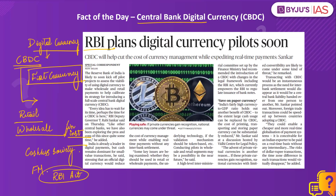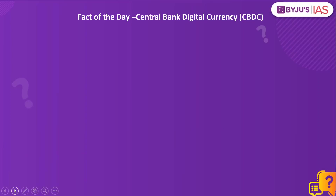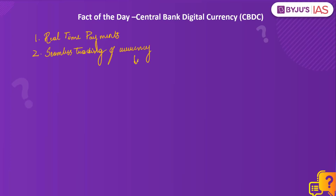Currently, the RBI Act empowers RBI to regulate the issuance of banknotes. Before introducing a government-backed digital currency, RBI should assess whether it can leverage the technology to issue fiat money in digital form. It has to check the feasibility of this central bank digital currency. Potential benefits include: money transfers and payments can be made in real-time, and the central bank would be able to track the exact location of every unit of currency, making currency tracking easier.